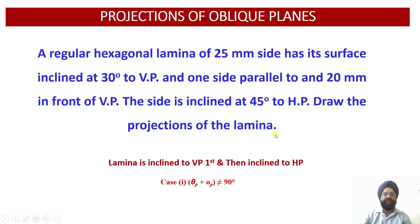After going through this problem statement, we have evaluated that this is a plane which is inclined to the vertical plane first, and thereafter it is inclined to the horizontal plane. Since the first inclination lies with the vertical plane, to begin with we will assume that this hexagonal lamina is parallel to the vertical plane.